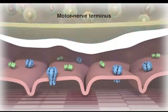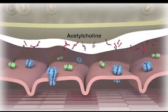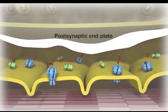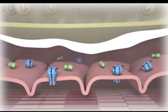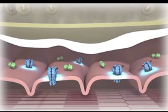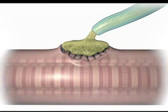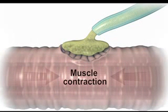An action potential reaching the motor nerve terminus triggers the release of acetylcholine from synaptic vesicles. Acetylcholine then rapidly diffuses across the gap to the postsynaptic endplate, where nicotinic acetylcholine receptors are clustered. These receptors convert the chemical signal into an electrical impulse, causing depolarization in the postsynaptic membrane.